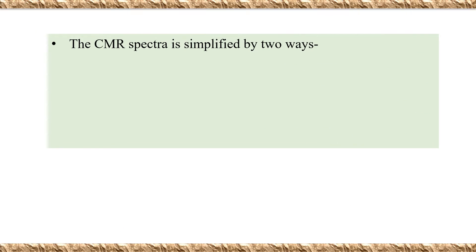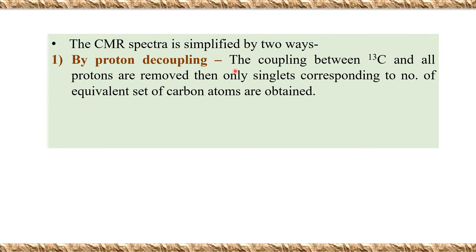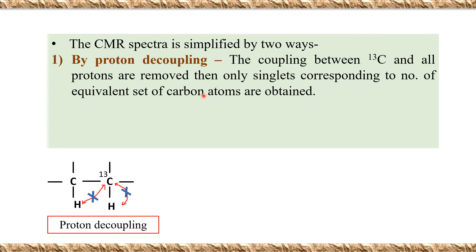To simplify the CMR spectra, two methods are used. The first is proton decoupling. In proton decoupling, the coupling between 13C and all protons is removed, and only singlets corresponding to equivalent sets of carbon atoms are obtained. Both couplings are cancelled, and that type of spectra is known as the proton decoupled spectra — only singlets are observed.